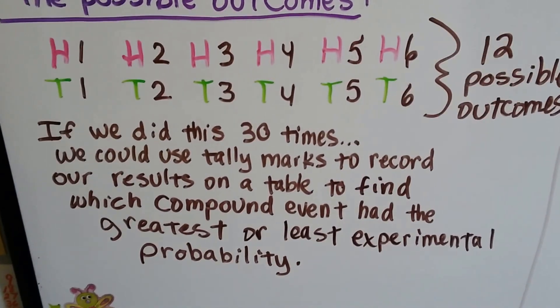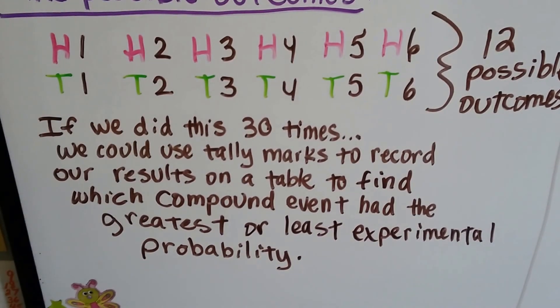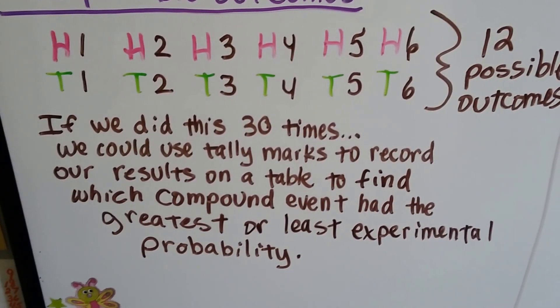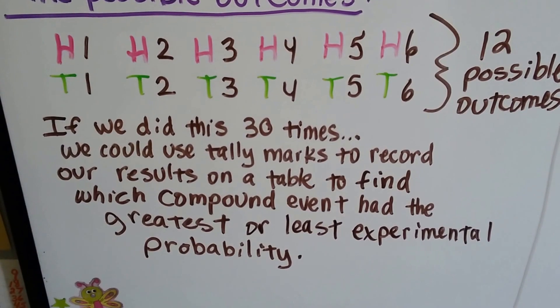And if we did this 30 times, we could use tally marks to record our results on a table to find which compound event had the greatest or least experimental probability.